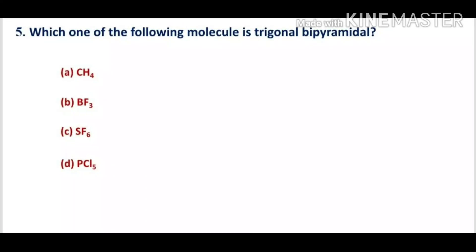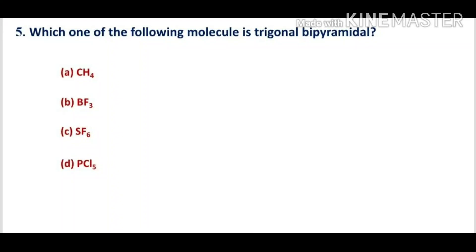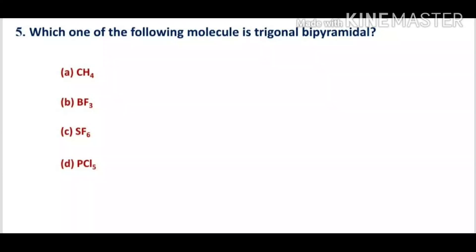Question 5: which one of the following molecules is trigonal bipyramidal? Option A, CH4; option B, BF3; option C, SF6; option D, PCl5.